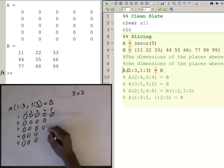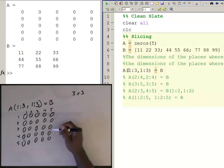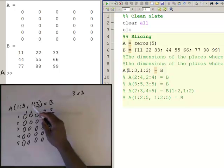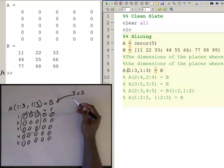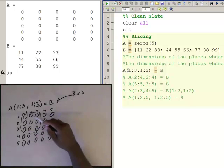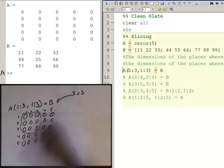I'm going to be filling in rows one through three, columns one through three, which is this area here. Okay, and so I'm going to take B, which is a three by three, and I'll take B, I'm going to stick all those values of B into that three by three.